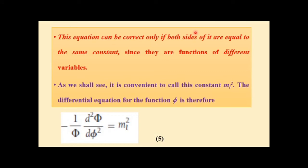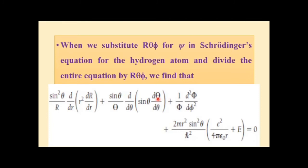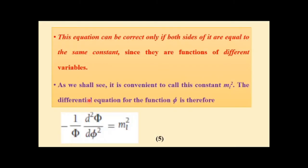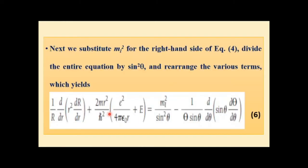This equation can be correct only if both sides are equal to the same constant, since they are functions of different variables. Because the terms are independent of each other — being functions of different variables — we can equate each term to a particular constant. This constant is ml². The differential equation for the function capital Phi is therefore: minus (1/Φ)(d²Φ/dφ²) = ml².